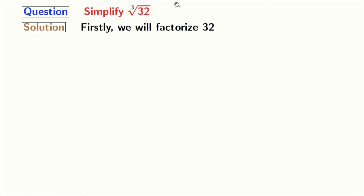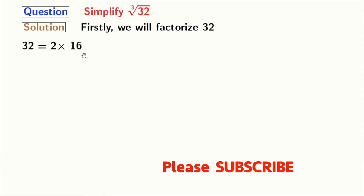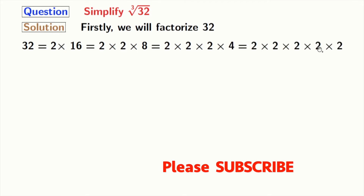At first, we will factorize 32. As 32 is an even number, it will be divisible by 2. And we have 32 equal to 2 times 16. 16 is also an even number, and 16 equals 2 times 8. We know that 8 is 2 times 4, and 4 is 2 times 2. All these numbers are prime numbers.